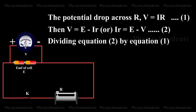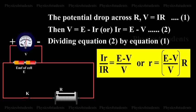Dividing equation 2 by equation 1, Ir divided by IR is equal to (E - V) divided by V, or r = [(E - V)/V] × R.